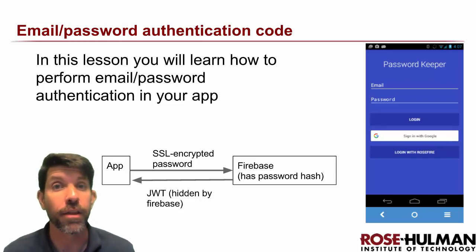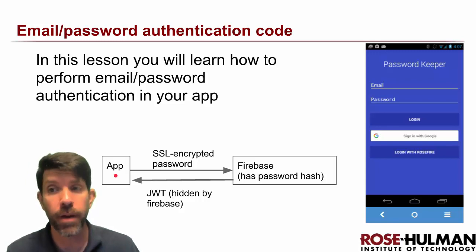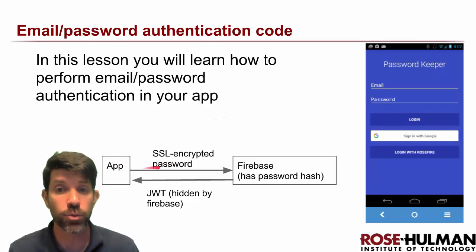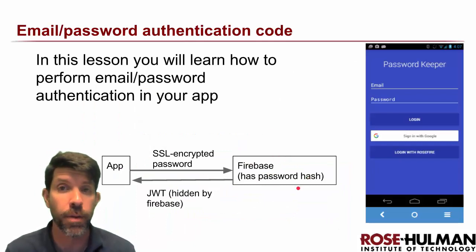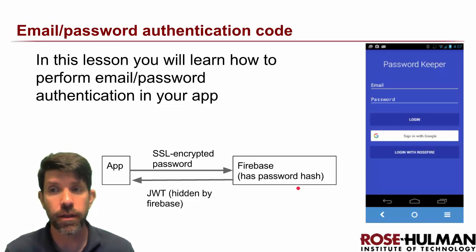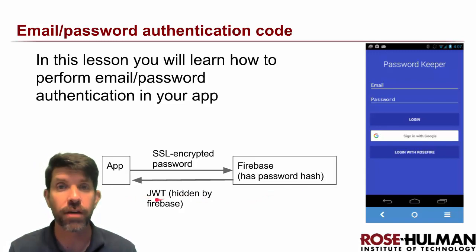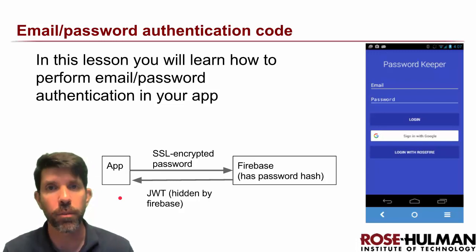Let's learn how to do email/password auth on the client side. What's going to happen is our app will ask for the email and password, the user types them in the UI, and when we say sign in with email and password, they get sent encrypted to Firebase. Firebase stores hashes of passwords, verifies them, and sends back a JWT — a JSON Web Token — hidden by Firebase as part of our credentials.